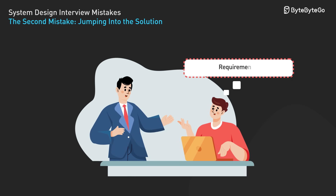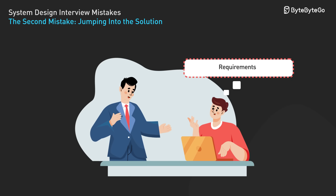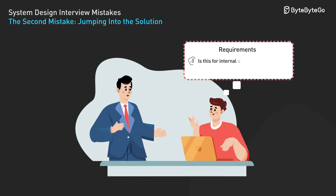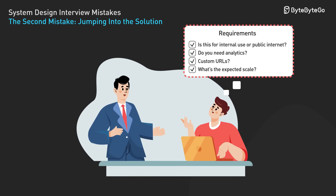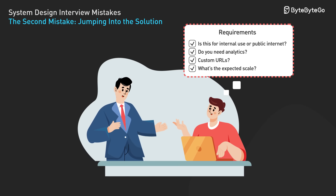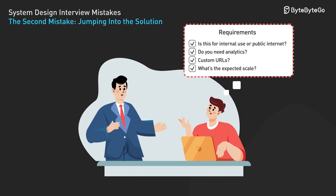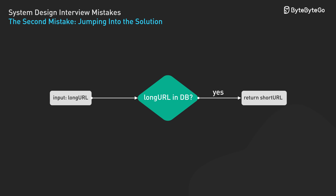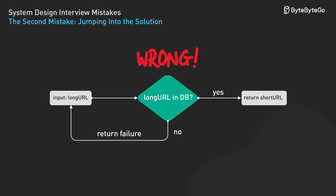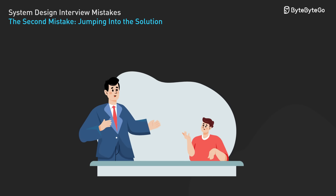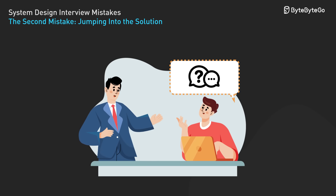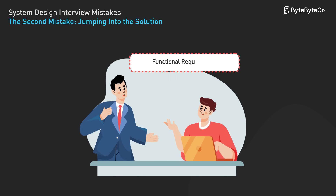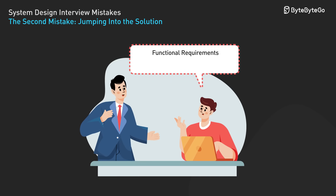Different URL shorteners have vastly different needs. Is this for internal use or the public internet? Do you need analytics? Custom URLs? What's the expected scale? Without clarifying requirements, you might build entirely the wrong system. The fix: always start with questions. Ask about functional requirements — what features do we need?